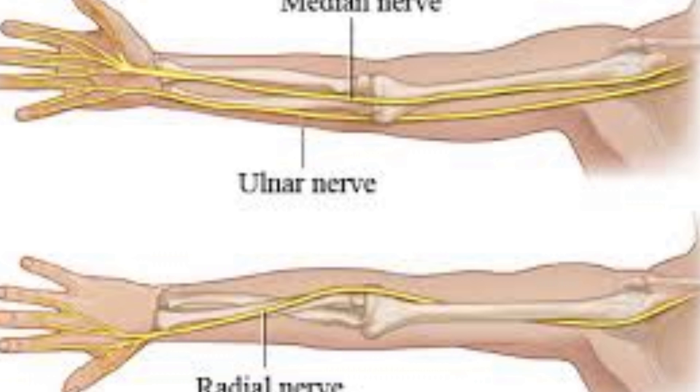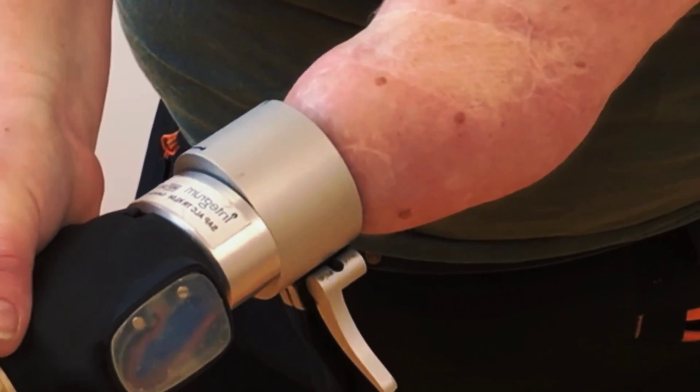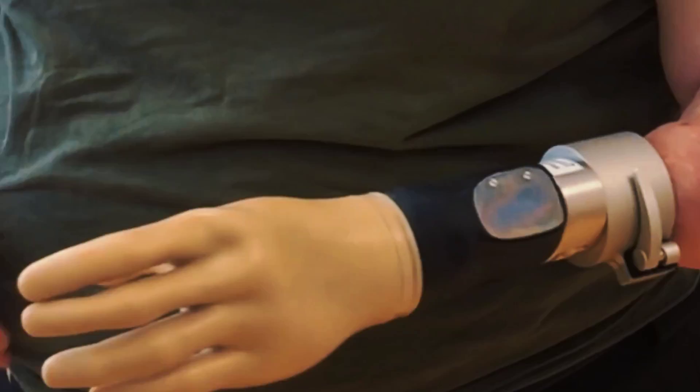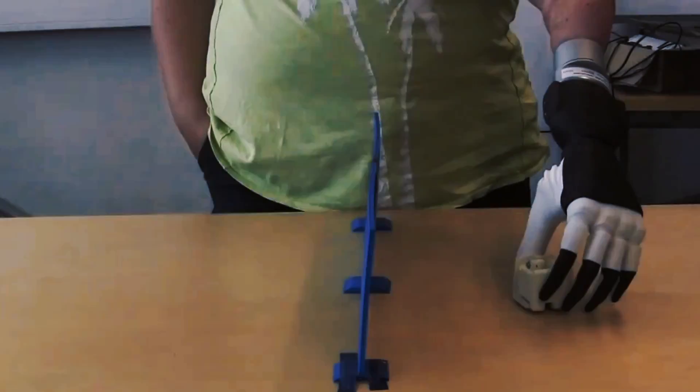Targeted muscle re-innervation is a surgery that rearranges nerves and muscles in the residual limb and links them to the remaining muscles. This allows the brain to send signals to the prosthesis through the nerves, just like it would do with a natural limb.